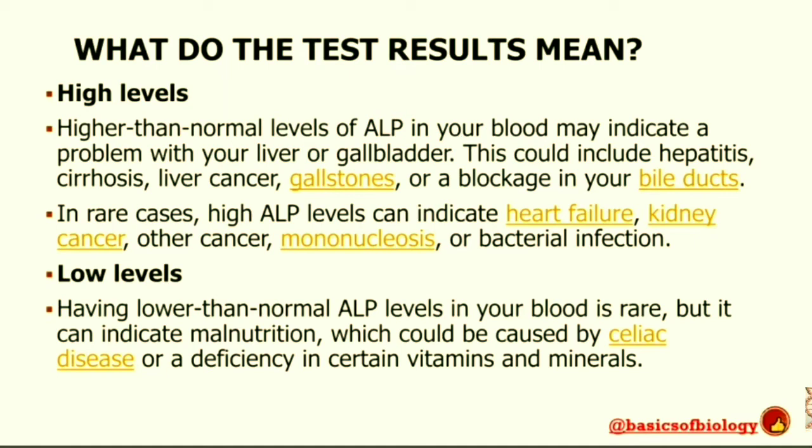In rare cases, higher levels of alkaline phosphatase can indicate heart failure, kidney cancer, other cancers, or bacterial infections. Having lower than normal alkaline phosphatase levels in your blood is rare, but it can indicate malnutrition, which could be caused by celiac disease or a deficiency in certain vitamins and minerals.